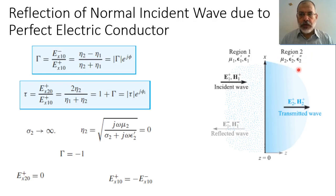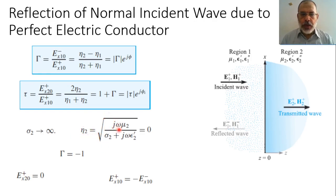For the case of a perfect electric conductor, the conductivity of the medium tends to be infinite. The intrinsic impedance of medium 2 would be the square root of j·omega·mu2 over (sigma2 + j·omega·epsilon2'). Because sigma2 tends to infinity, the intrinsic impedance in this case tends to be 0.